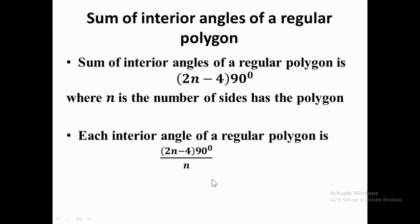To find each interior angle, divide the interior angle sum by the number of sides n. It is very important that you understand and memorize these four formulas for the theorems of polygons so you can use them at any time. In the next video we'll be talking about how to use these theorems to solve problems. If you have not subscribed to our YouTube channel, please do so, like the video, comment, share with your colleagues, and we'll see you in the next video. Thank you.